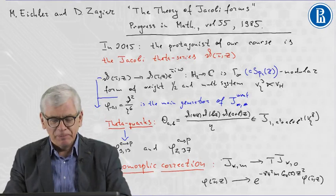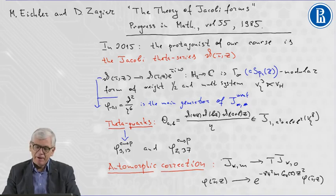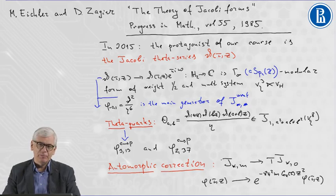Thirty years ago Martin Eichler and Don Zagier published their book The Theory of Jacobi Forms. This book was published in Progress in Math in 1985.